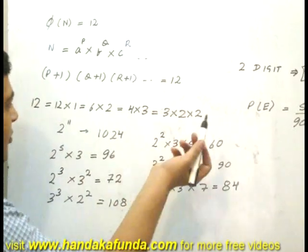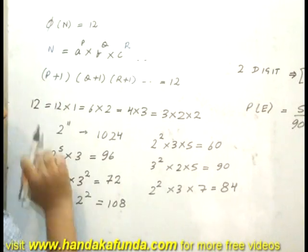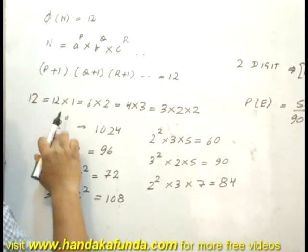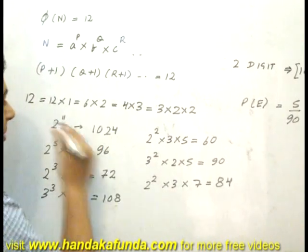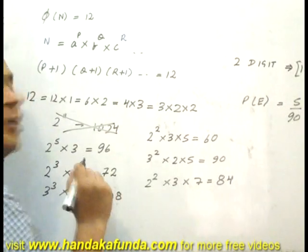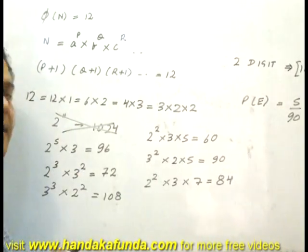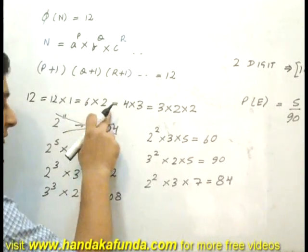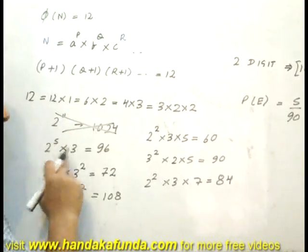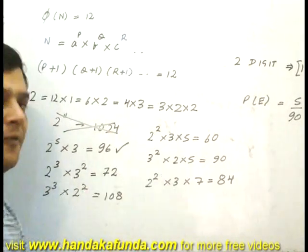How can I write 12 as a product? It can be 12 into 1. If it is 12 into 1, the power should be at least 11. My number would be 1024 but this is invalid because my number has to be a 2 digit number. Then I try 6 and 2, so powers 5 and 1. That is 2 to the power 5 into 3 which gives 96. This is valid.